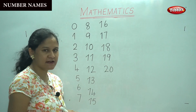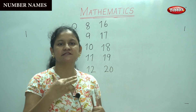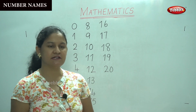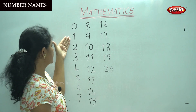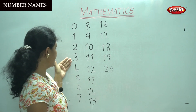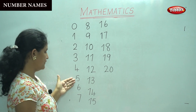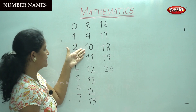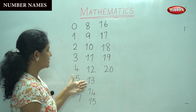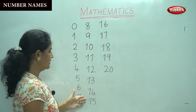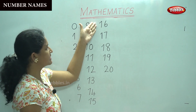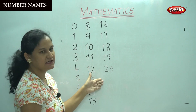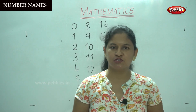15, 16, 17, 18, 19, 20. Shall we say the numbers again? We have to keep on saying the numbers so we are able to identify them: 0, 1, 2, 3, 4, 5, 6, 7, 8, 9, 10, 11, 12, 13, 14, 15, 16, 17, 18, 19, 20. These are the numbers 0 to 20.